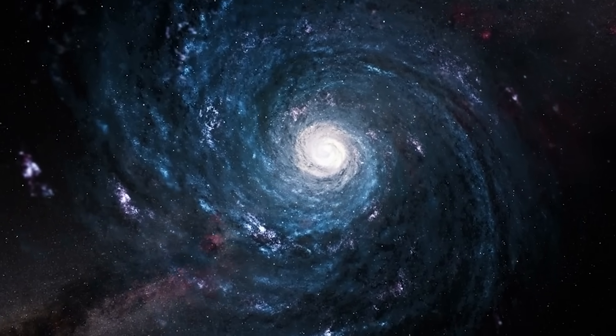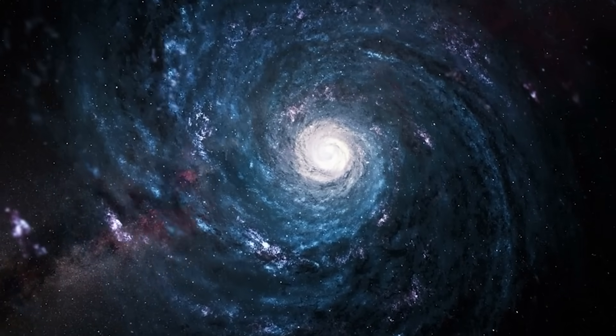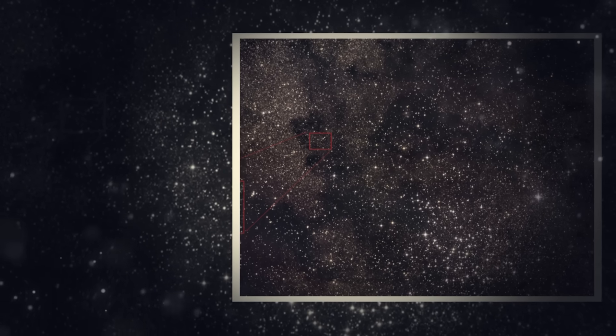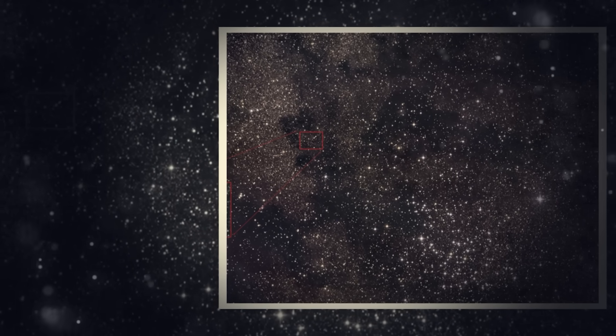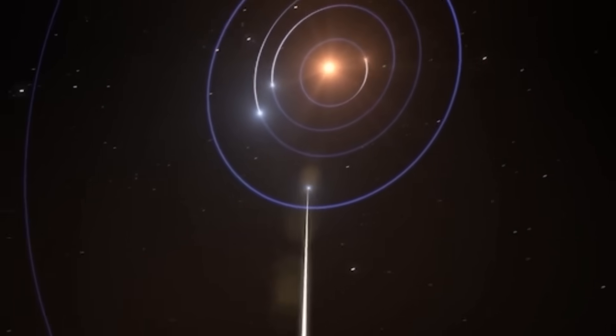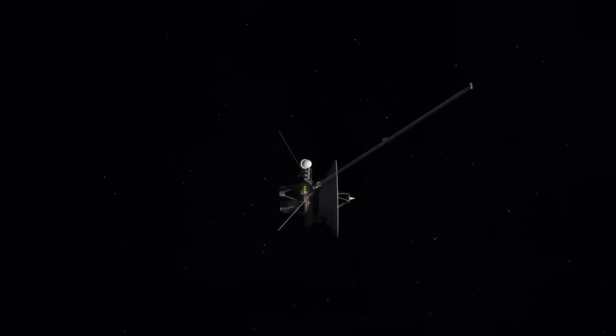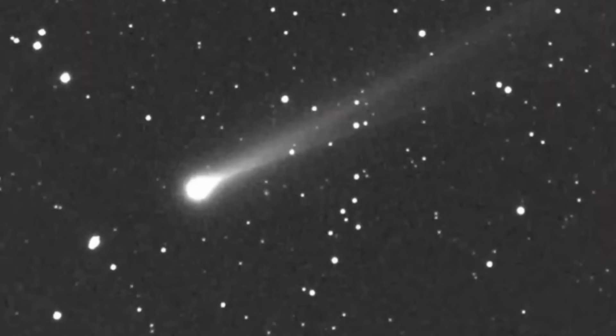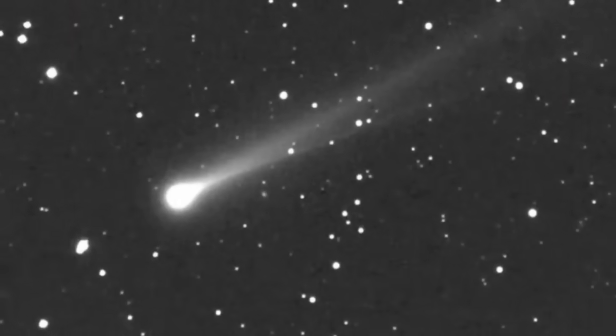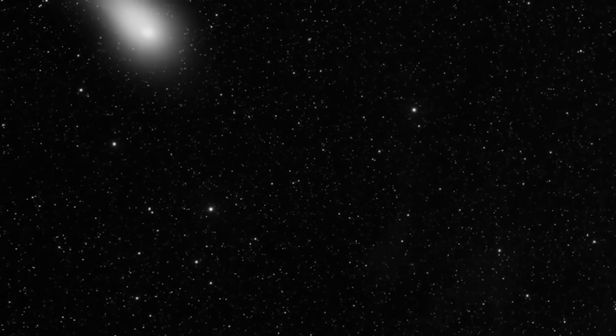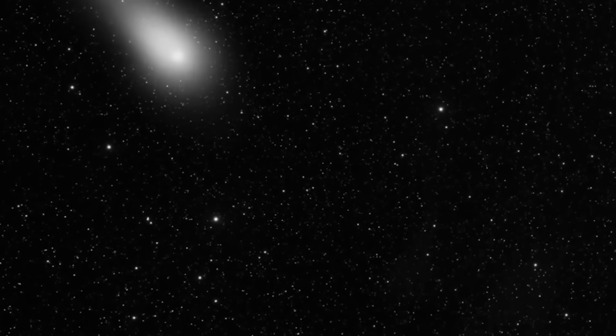For Loeb, this isn't just about curiosity anymore. It's about preparation. He spent years warning that the universe may already be interacting with us in ways we don't yet understand. He calls 3i/ATLAS a potential black swan event, something with an extremely low probability but world-changing consequences. He compares humanity's reaction to ants living beside a highway. To those ants, the rumble of a passing motorcycle would be incomprehensible. They'd see a shadow, feel a vibration, and then it's gone. They could never imagine the machine, the rider, or the civilization behind it.